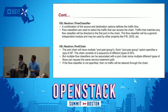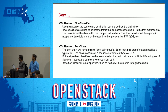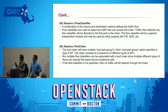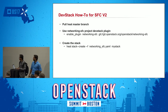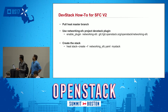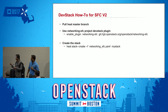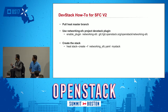The flow classifier mainly defines the traffic flow based on source and destination combinations. You can define source IP, destination IP, source port, and destination port. The port chain defines the sequence of your port pair groups, and using port chain you can link your port pair group to a flow classifier. To get started, you can pull the Heat master branch, then enable the networking SFC plugin in your DevStack configuration file. To create a stack, you create the networking_sfc.yml file containing all four Heat resources mentioned.